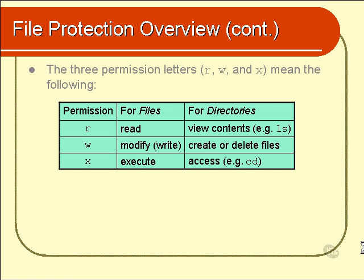The most important one is the W permission — can you create or delete files in the directory? It's absolutely critically important to understand this: a file may not be able to be modified because the W bit is turned off, but that file may be able to be deleted because the W bit is turned on for the directory the file is sitting in. So if you want to protect a file, turning off the W bit on the file is not enough — you also need to turn off the W bit for the directory.